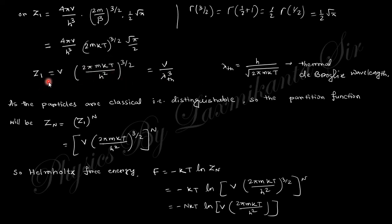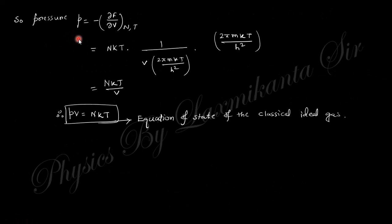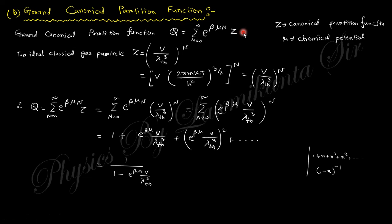For a single particle that is Z₁; for N particles, Z_N = Z₁^N. The Helmholtz free energy is F = -kT·ln(Z_N). Substituting the partition function gives the expression for F. The pressure is then P = -(∂F/∂V) at constant N and T. Taking this partial derivative yields the equation of state PV = NkT for the ideal gas using the canonical ensemble.